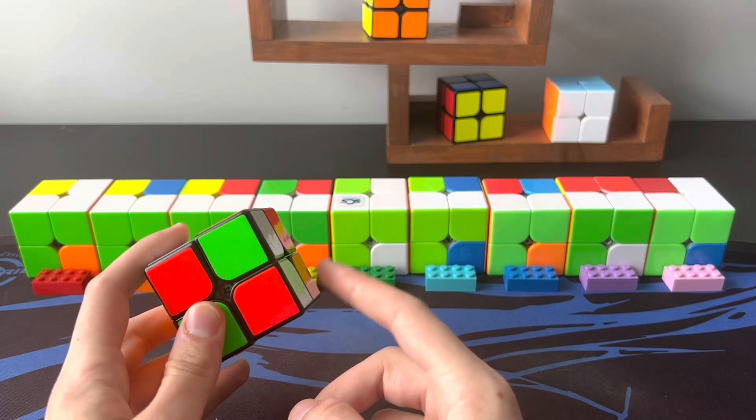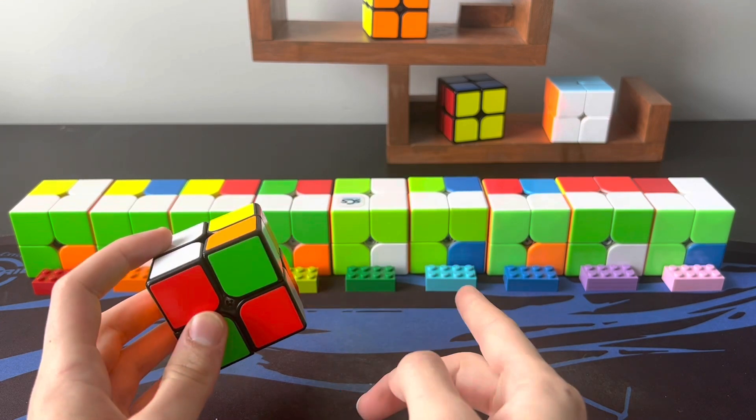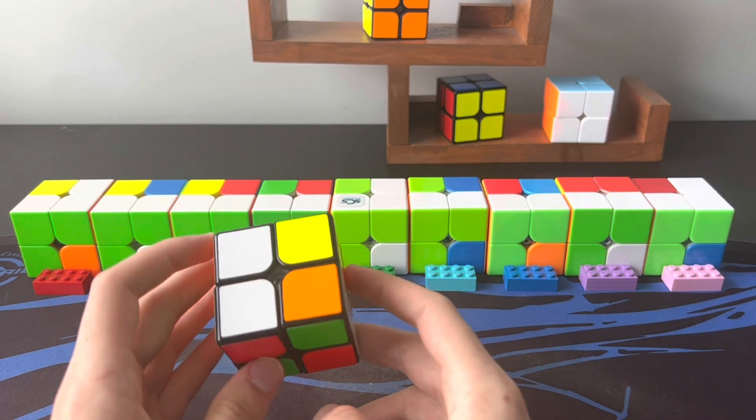And lastly, if it's oriented like this, where the white corner is facing to the right, I'm going to recognize it like a TCLL minus case.